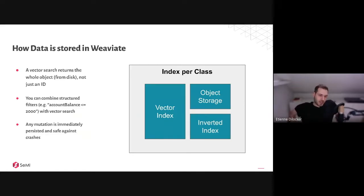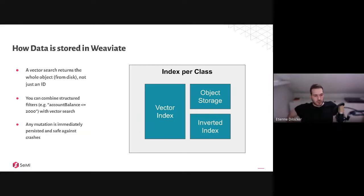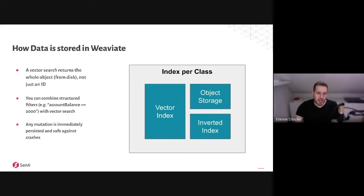For example, you could say: give me all the users that are close to this specific user — which is the vector search part — but only if the account balance is less than or equal to 2,000. We want to do this as a pre-filter, where we first know what those users are and then limit the vector search to them. If you do a post-filter instead, you first do your vector search, but then maybe none of the results match the filter. Also, because it's a database, any mutation you do — by the time Weaviate returns a successful status code — that data is written somewhere on disk.